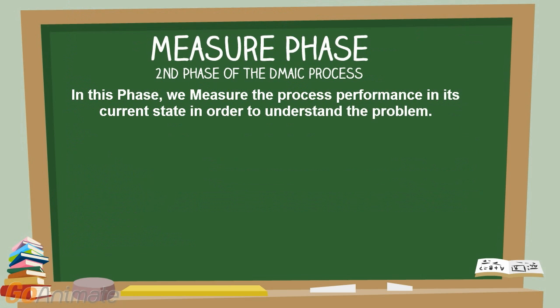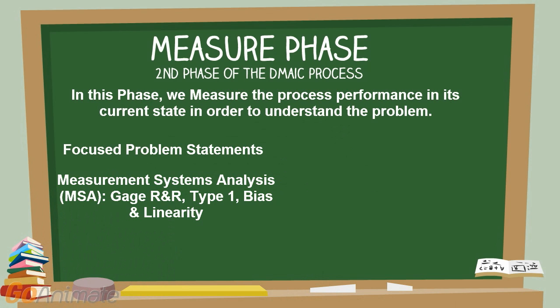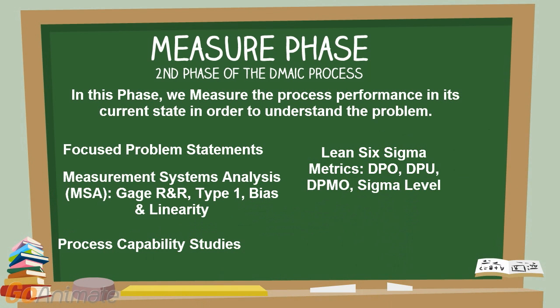At the end of the Measure phase, you will have completed several activities in order to complete the following tasks and objectives: focused problem statements; Measurement Systems Analysis including Gauge R&R, Type 1, Bias and Linearity; Process Capability Studies; Lean Six Sigma Metrics including DPO, DPU, DPMO, and Sigma Level; and a Revised Project Charter.